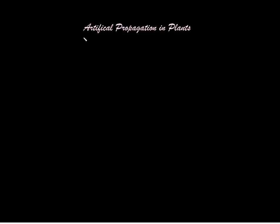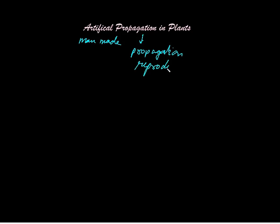Artificial propagation. Artificial means man-made. Propagation means propagating or reproducing. It is a part of vegetative reproduction.